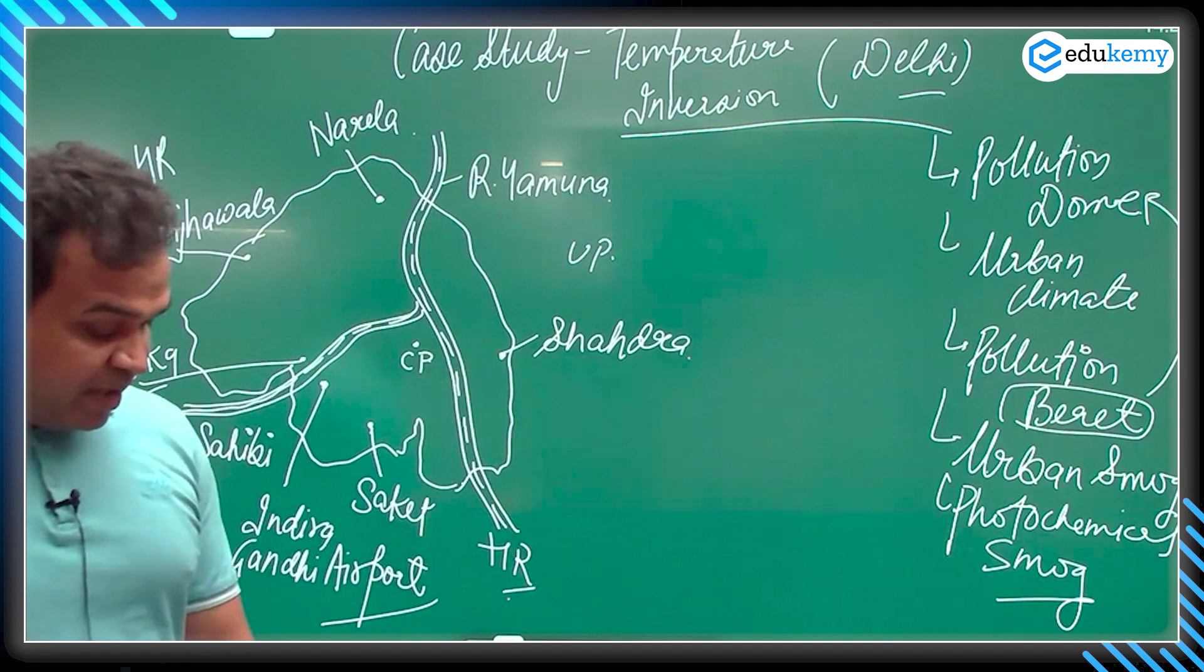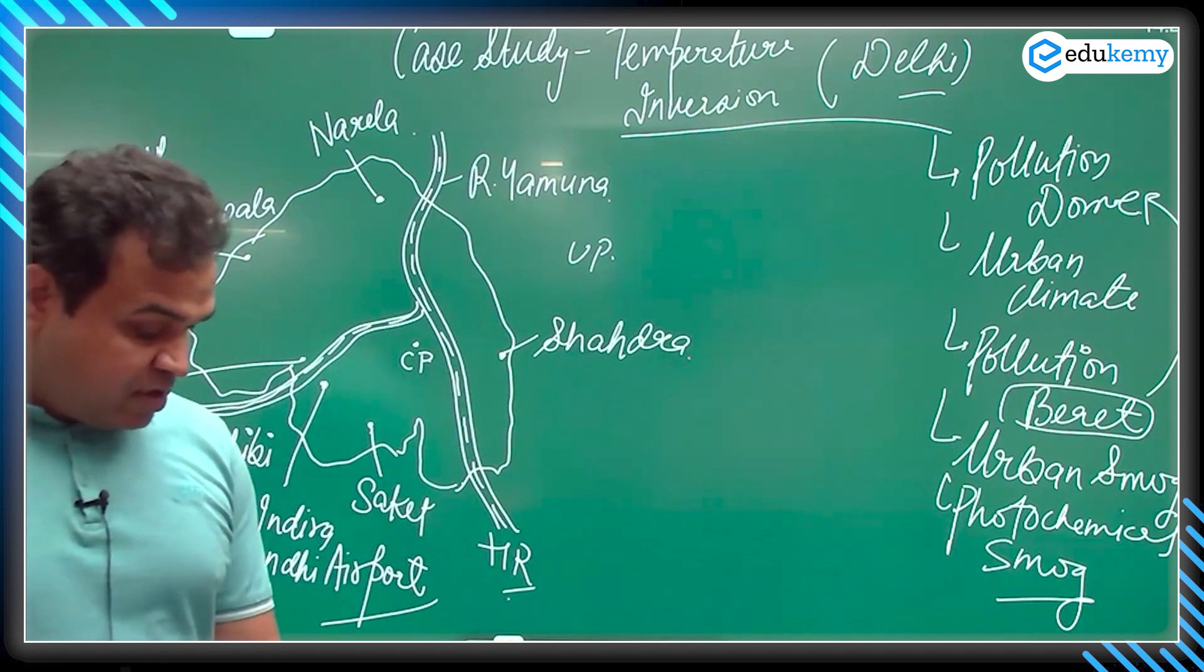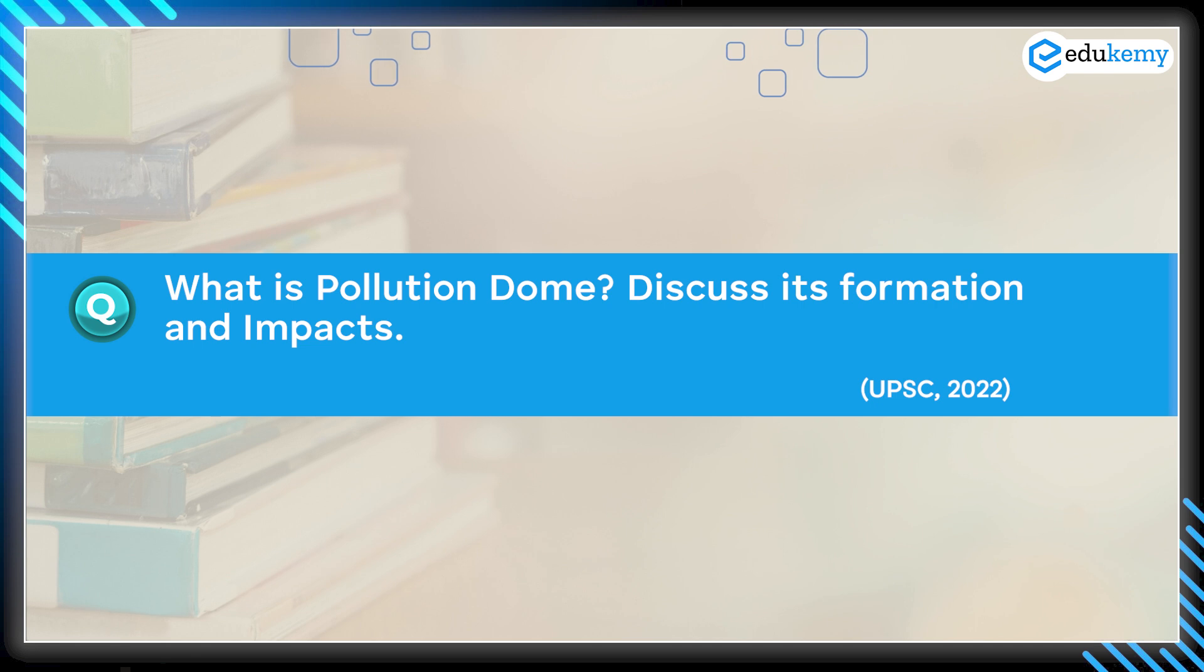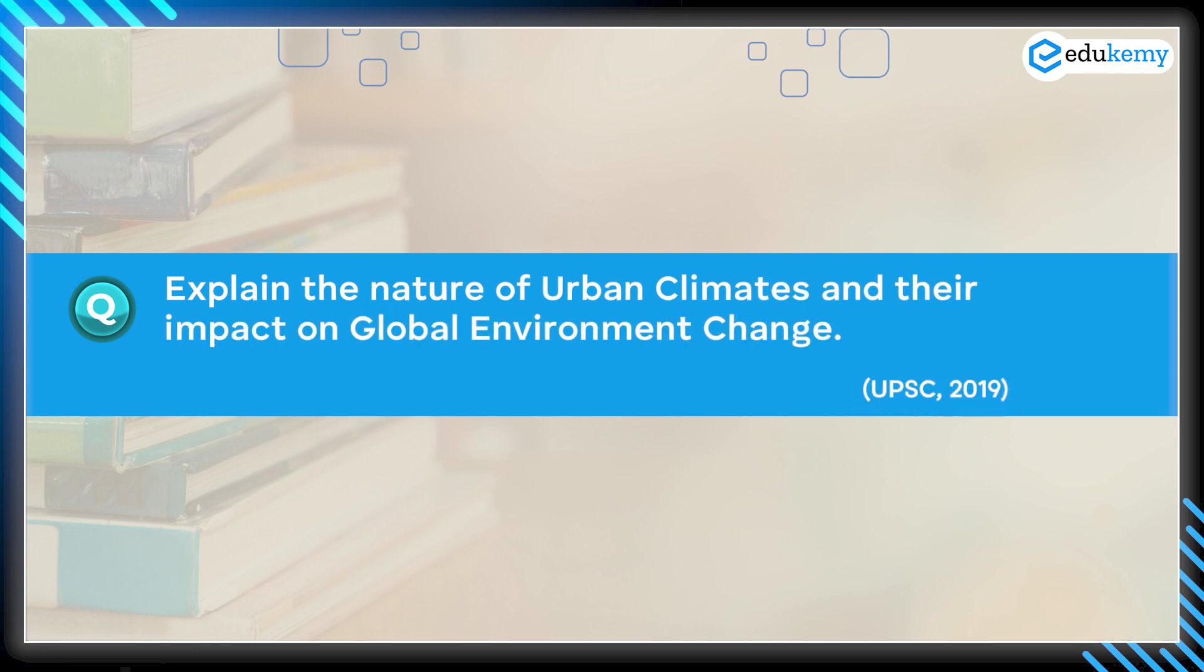Please write down the questions that have been asked. One is: What is pollution dome? Discuss its formation and impacts, 2022, 10 marks. The next question is: Explain the nature of urban climate and their impact on global environmental change, 2019, 15 marks.